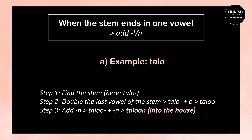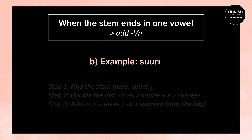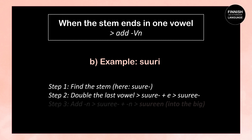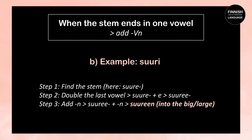Another example: the word suuri, which means large or big. First we find the stem, which is suure. Then we double the last vowel: suure + e = suuee. Then we add N: suuee + N = suureen, which means to or into the big.